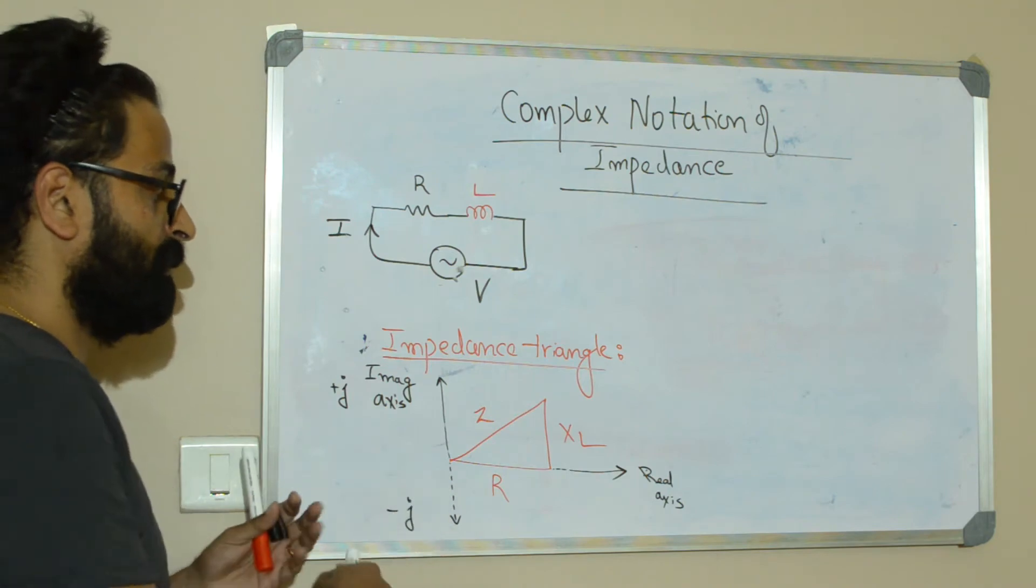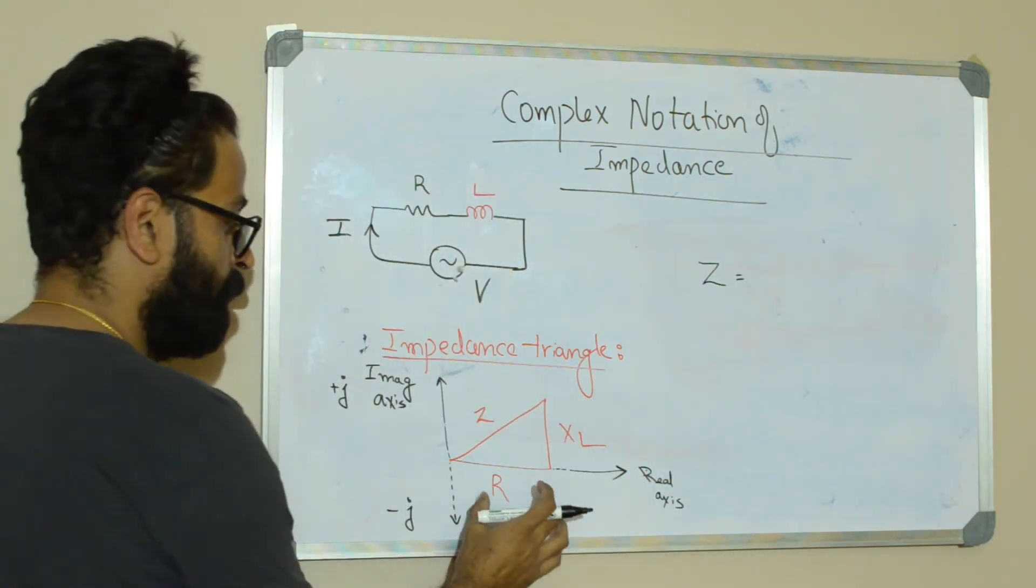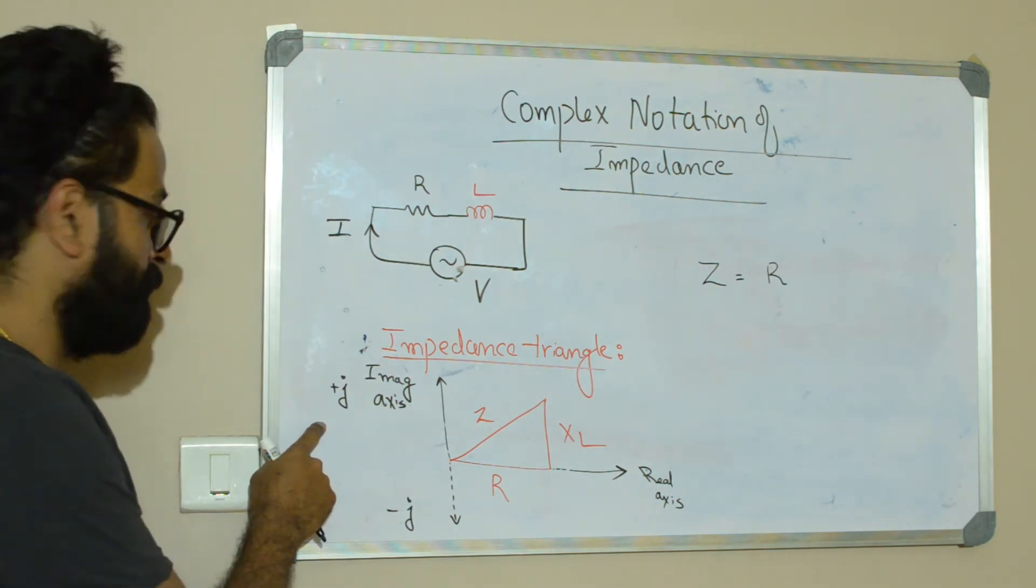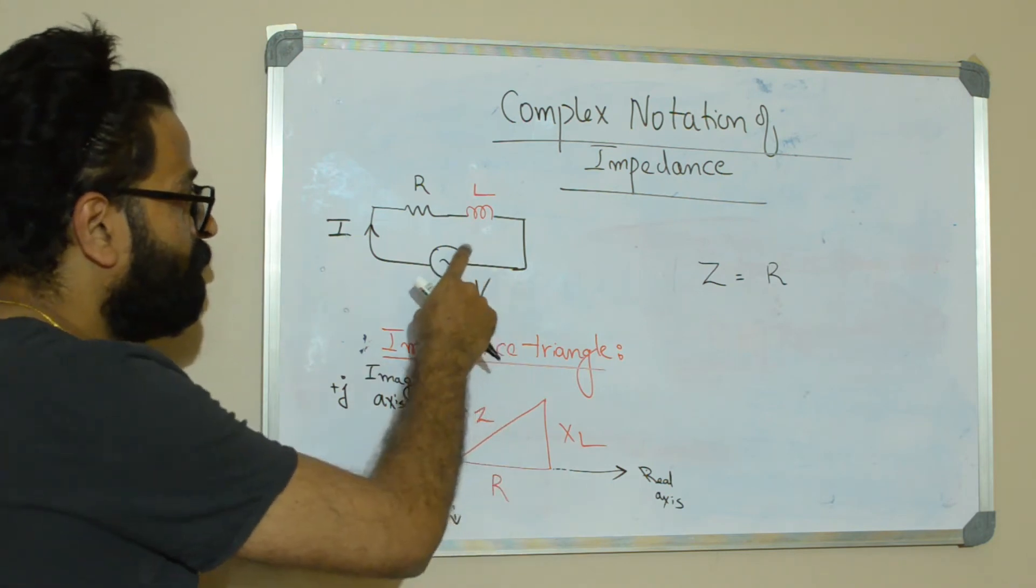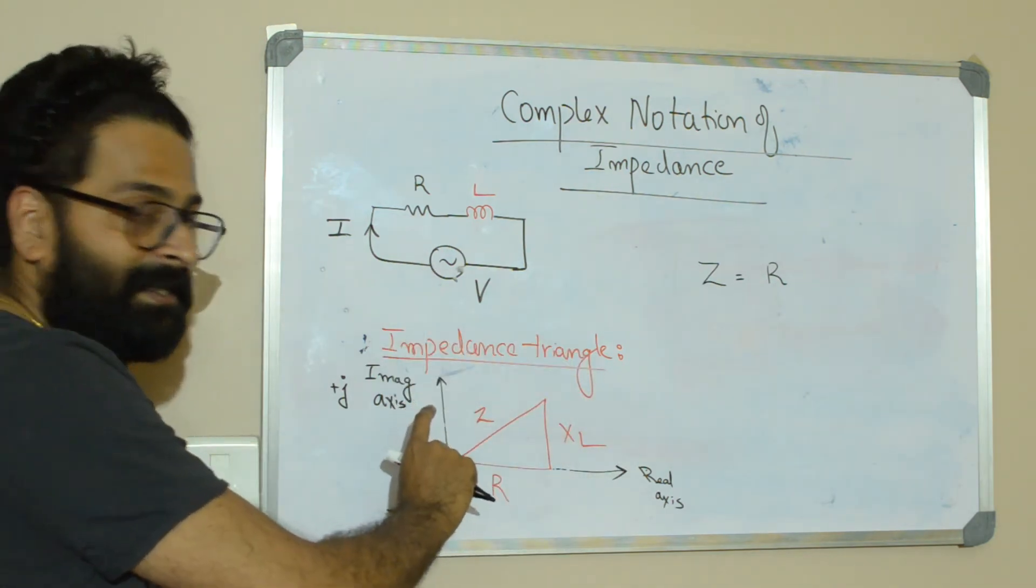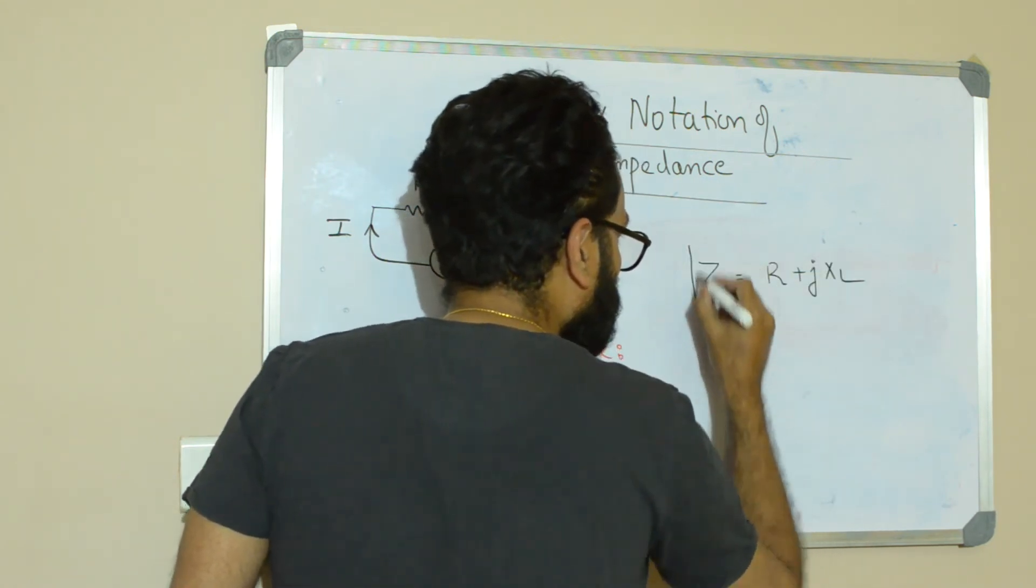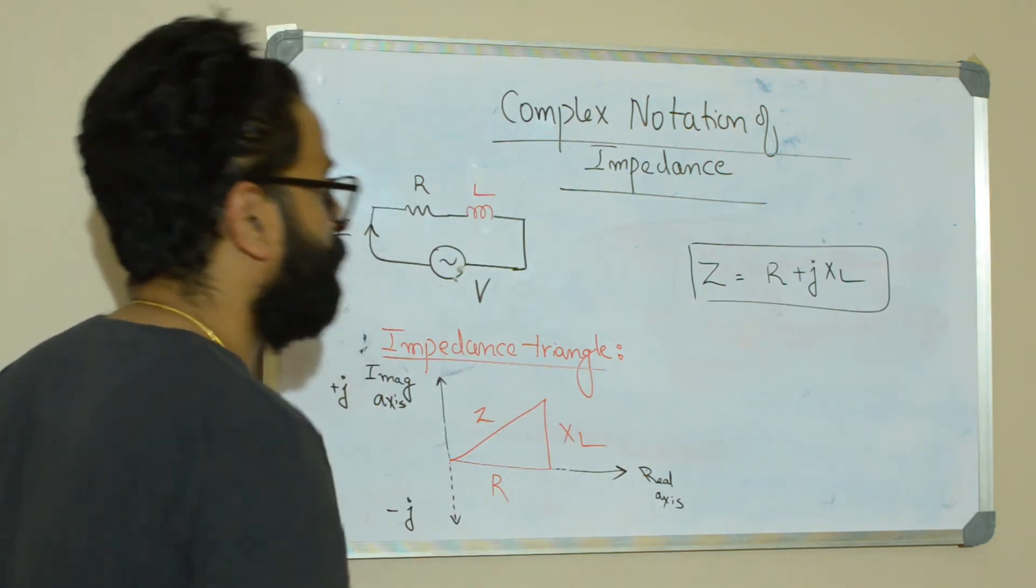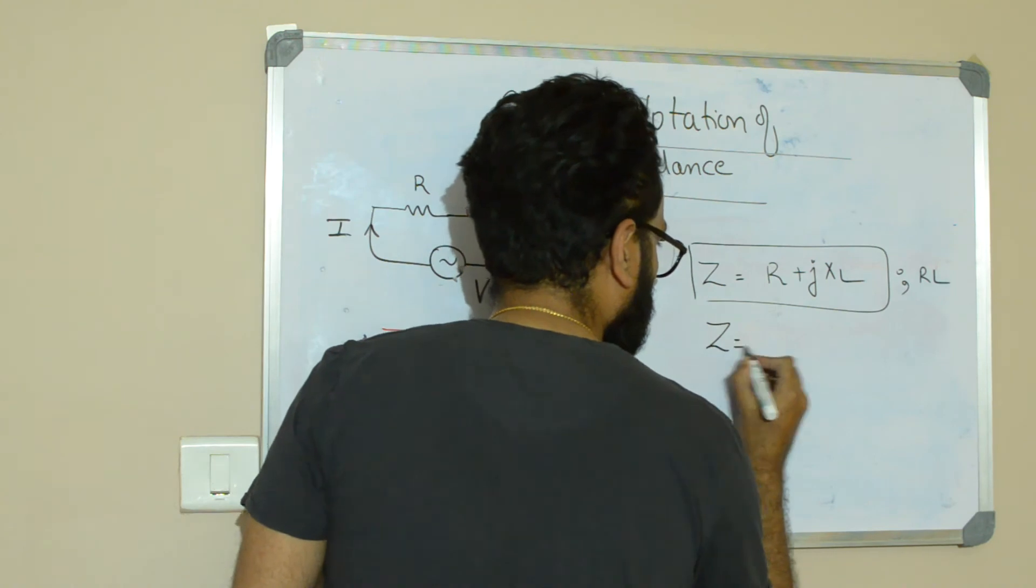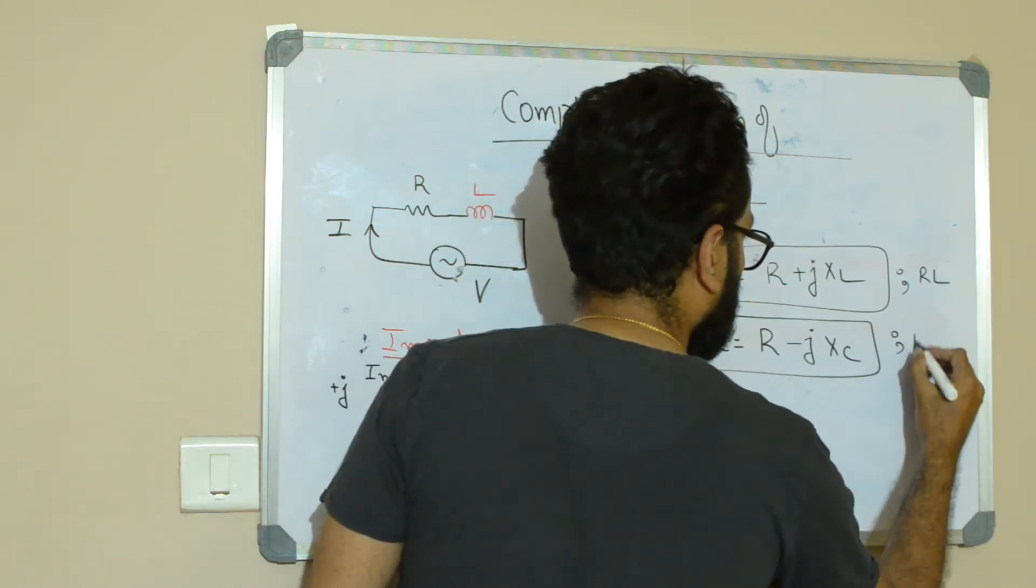When you write the complex number for RL circuit, what you can do is you can first write down the real part which is resistance R, and then you can write down the imaginary part along with the sign plus or minus j. In case of RL circuit, the inductive reactance XL is projected along positive imaginary axis, so you can take the imaginary part as plus j XL. So that's your complex notation. For RL circuit the complex notation is R plus j XL. On the other hand, for an RC circuit the complex notation is R minus j Xc. This is for RL circuit.